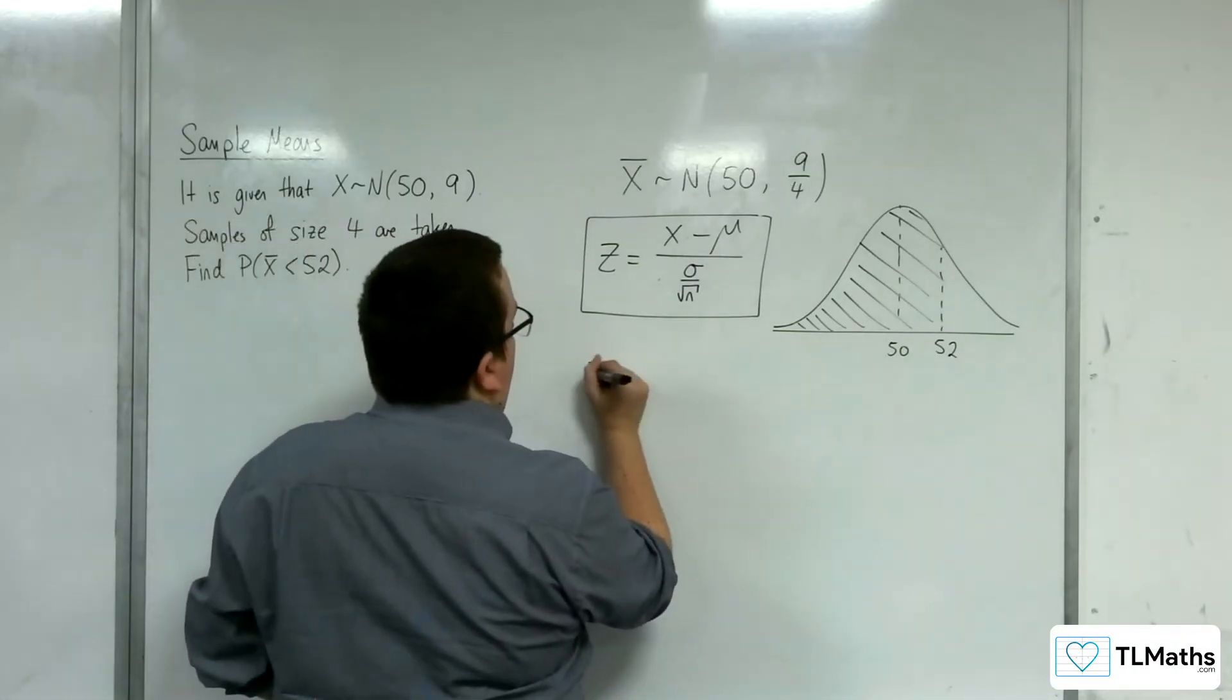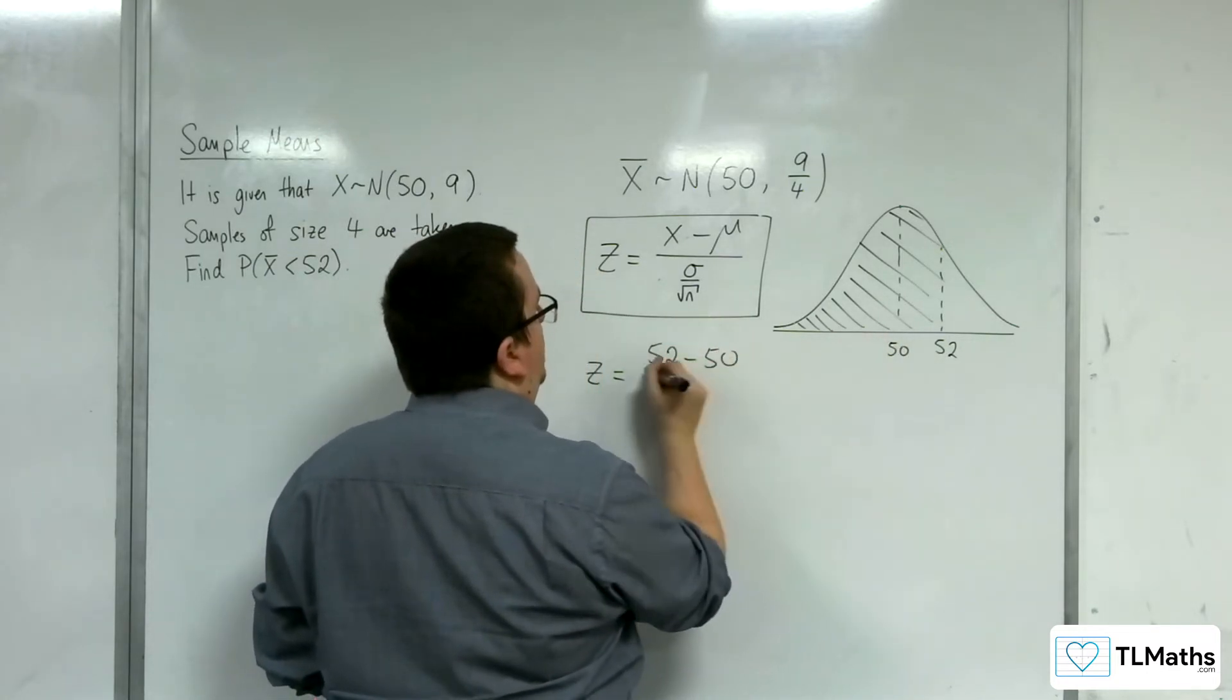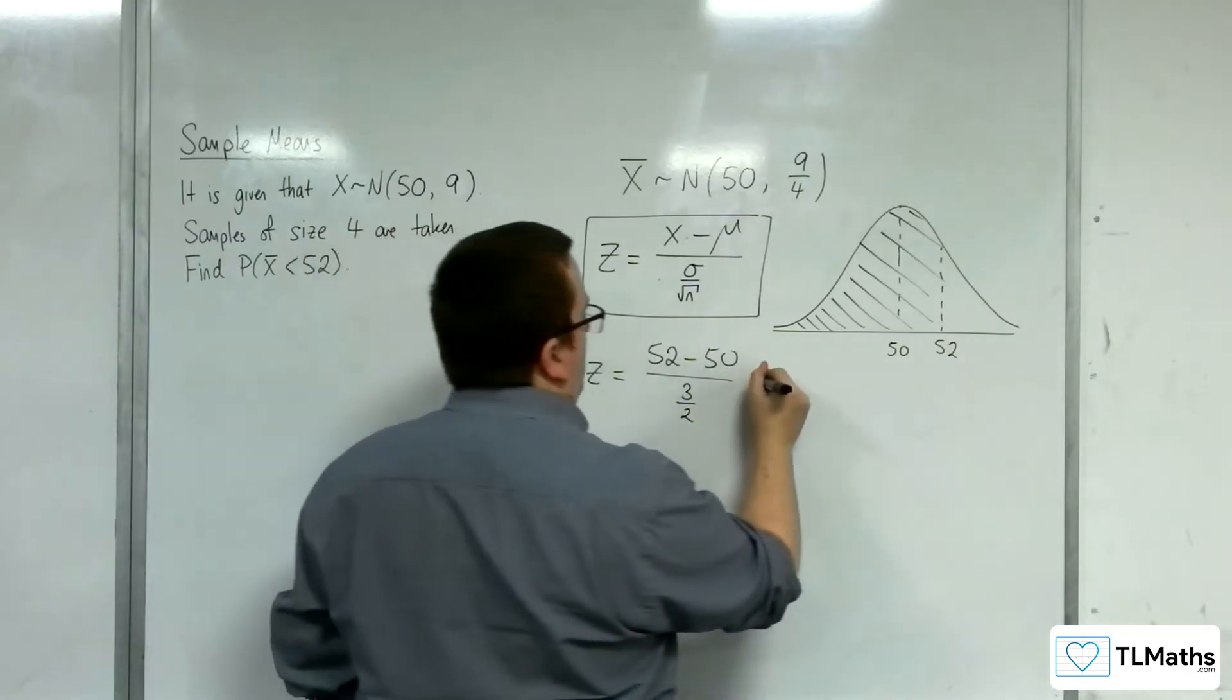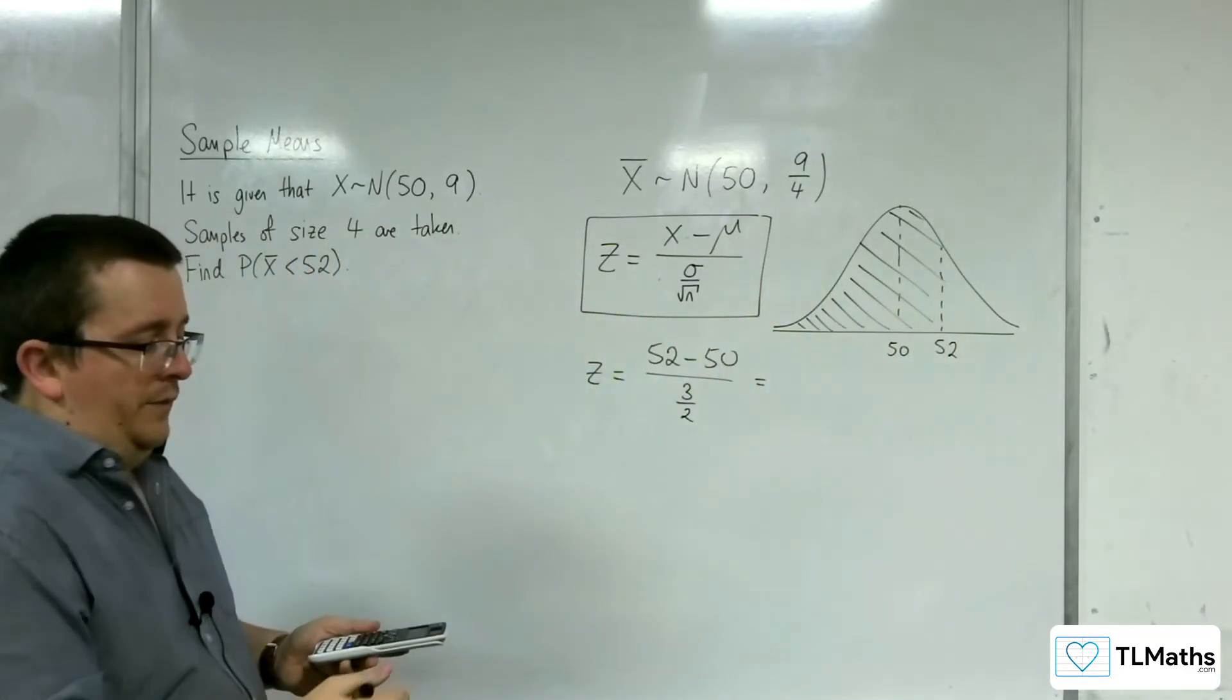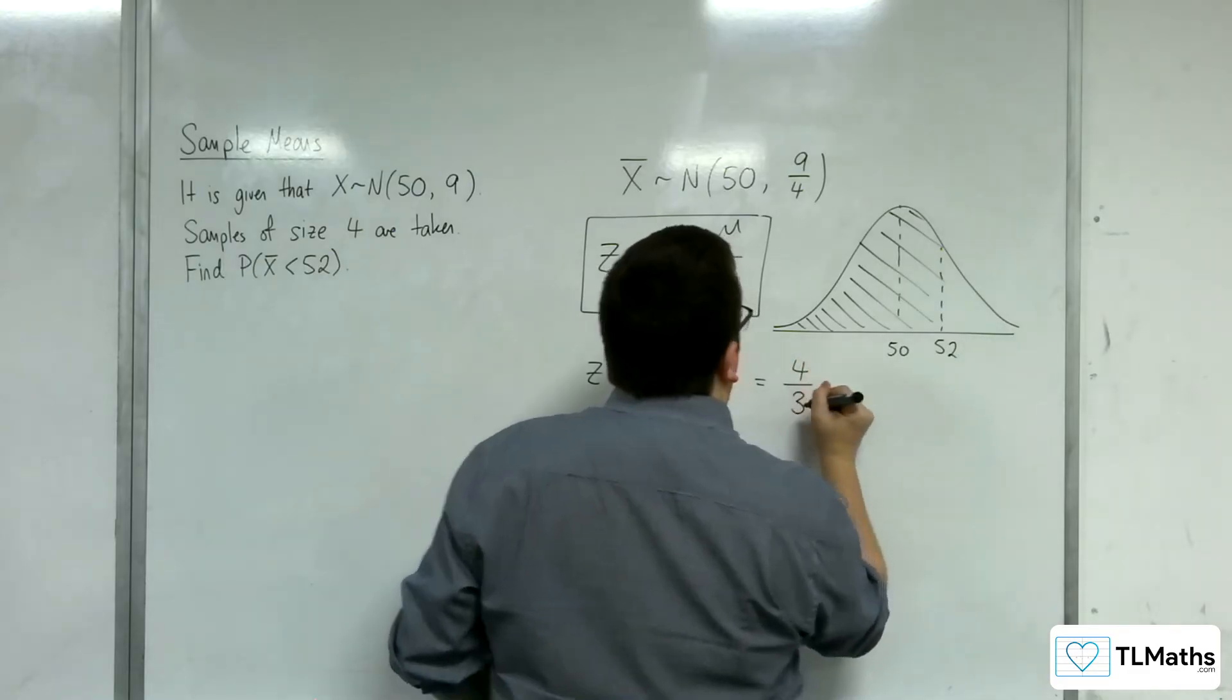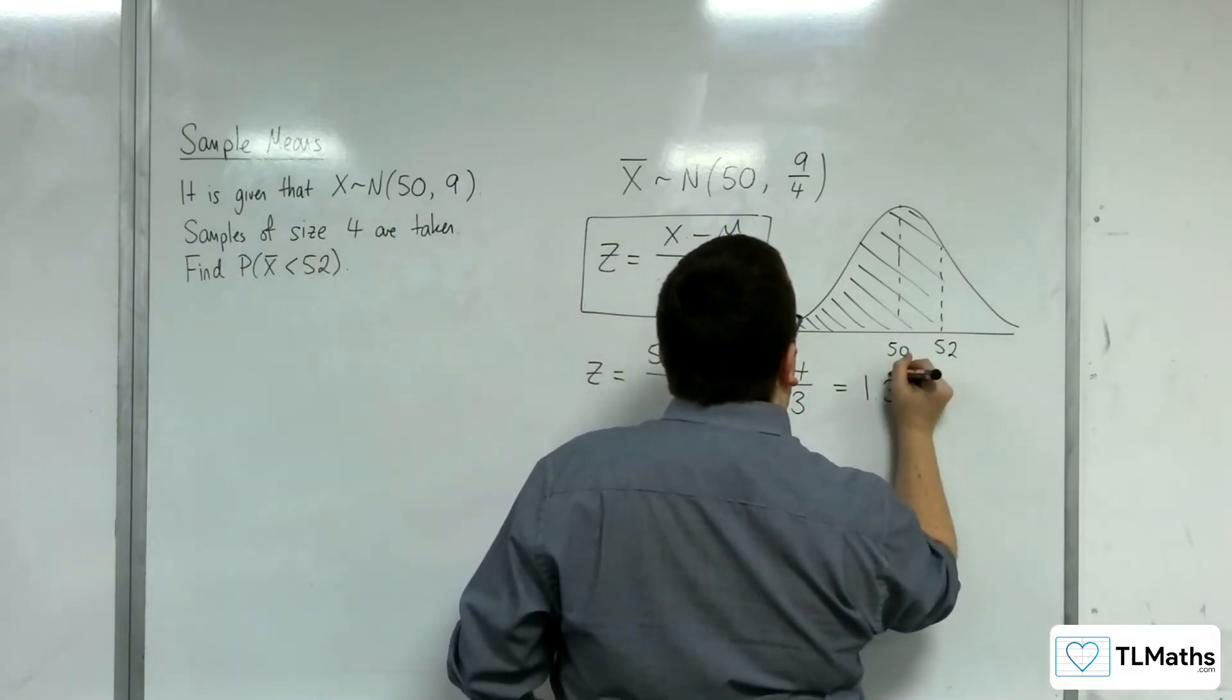So, what is my z value? My z value is equal to my x value, 52, take away my mean, divided by the standard error, which is 3 over 2, the square root of 9 quarters. So let's work that out. On the top we've got 2, and we're dividing that by 3 halves, and so we get 4 thirds. So, that is my z value, so that's 1.3 recurring.